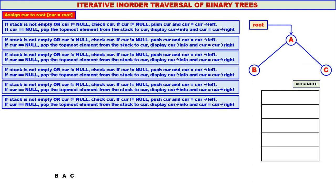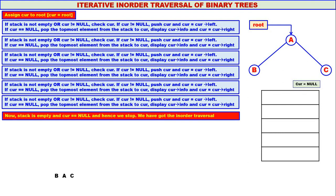Now you can observe: the stack has also become empty and curry has also become equal to null. Since both conditions fail, we stop. We have got the inorder traversal. The inorder traversal for the given tree is B, A, C.